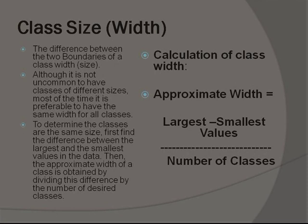To determine the classes of the same size, first find the difference between the largest and the smallest values in the data. Then the approximate width of a class is obtained by dividing this difference by the number of desired classes.